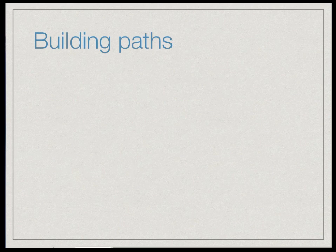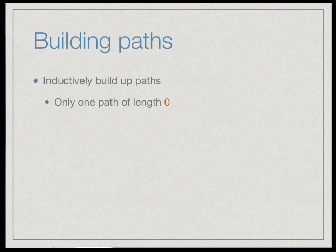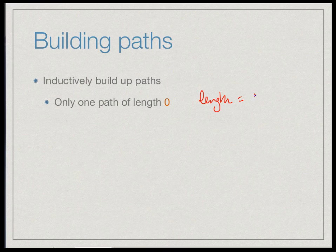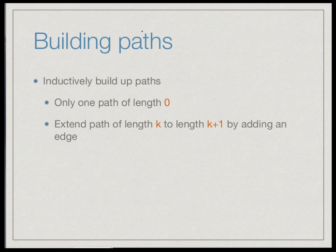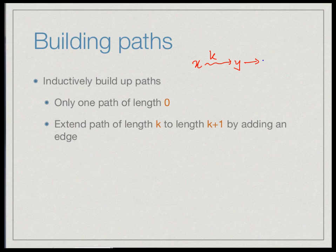So we need an alternative approach. We will start building up paths of longer and longer lengths. Inductively we start with the empty path of length zero — here length counts the number of vertices. If we already have a path of length k from x to y, we can extend it by one extra edge to a path of length k+1. We will build all paths of length k+1 by extending all paths of length k.